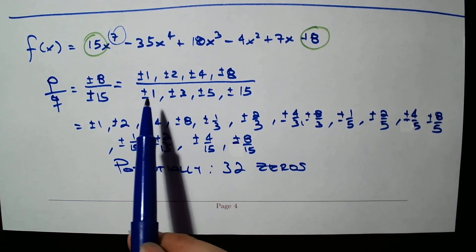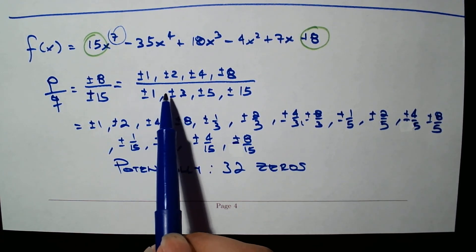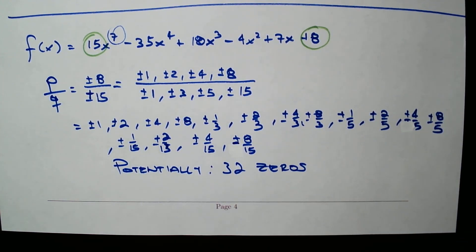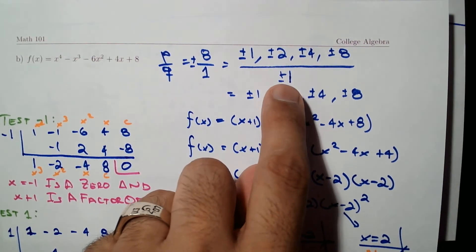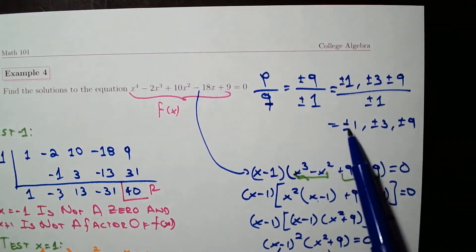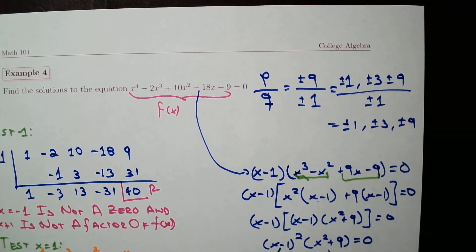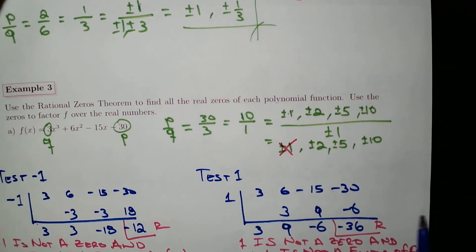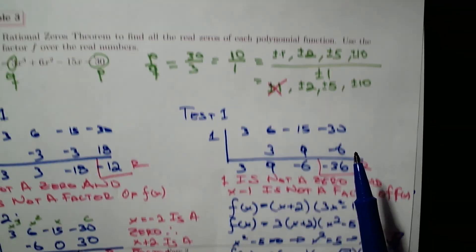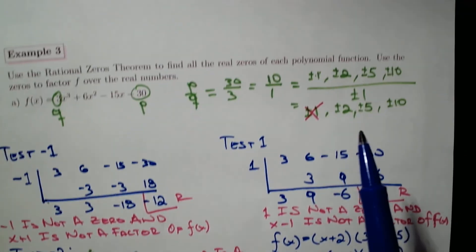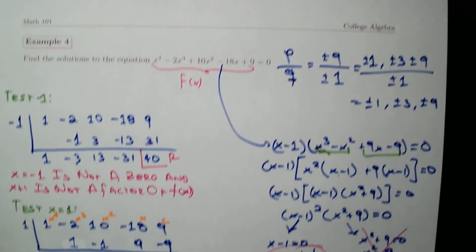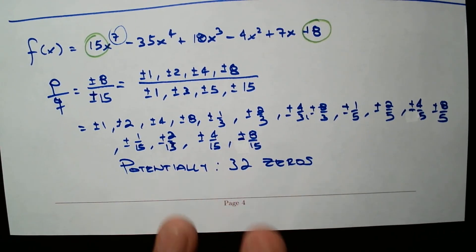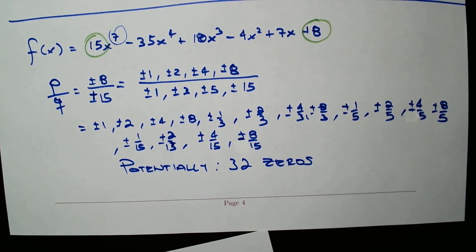This is what we do when the leading coefficient is not 1 and we get multiple denominators — the list of potential zeros can be quite large. This is the end of this section. I will see you on the next video. Thank you.